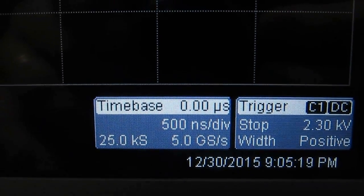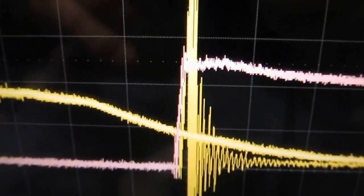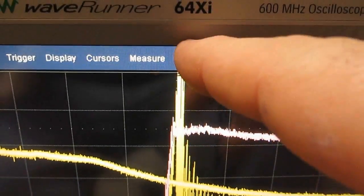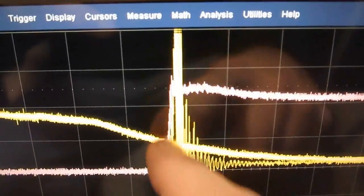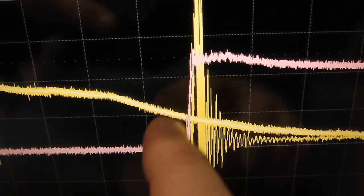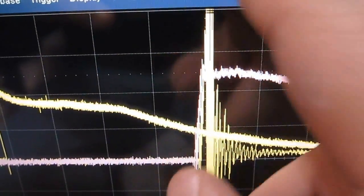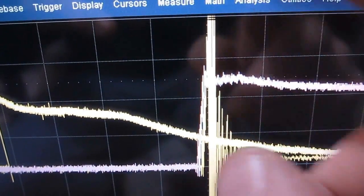This is currently 500 nanoseconds per division. You can see it's going right off the screen. It's not surprising. Again it's a thousand volts per division. We're driving this with a 5,000 volt pulse.